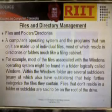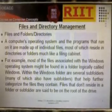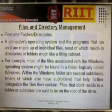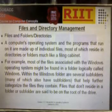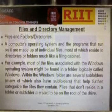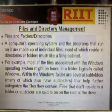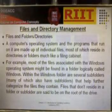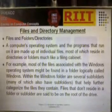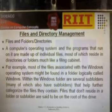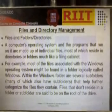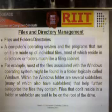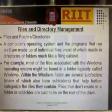Files and Folders (Directories). A computer operating system and the programs that run on it are made up of individual files, most of which reside in directories or folders, much like a filing cabinet. For example, most files associated with the Windows operating system might be found in a folder called Windows. Within the Windows folder are several subfolders, many of which also have subfolders, that help further categorize the files. Files that don't reside in a folder or subfolder are said to be on the root of the drive.